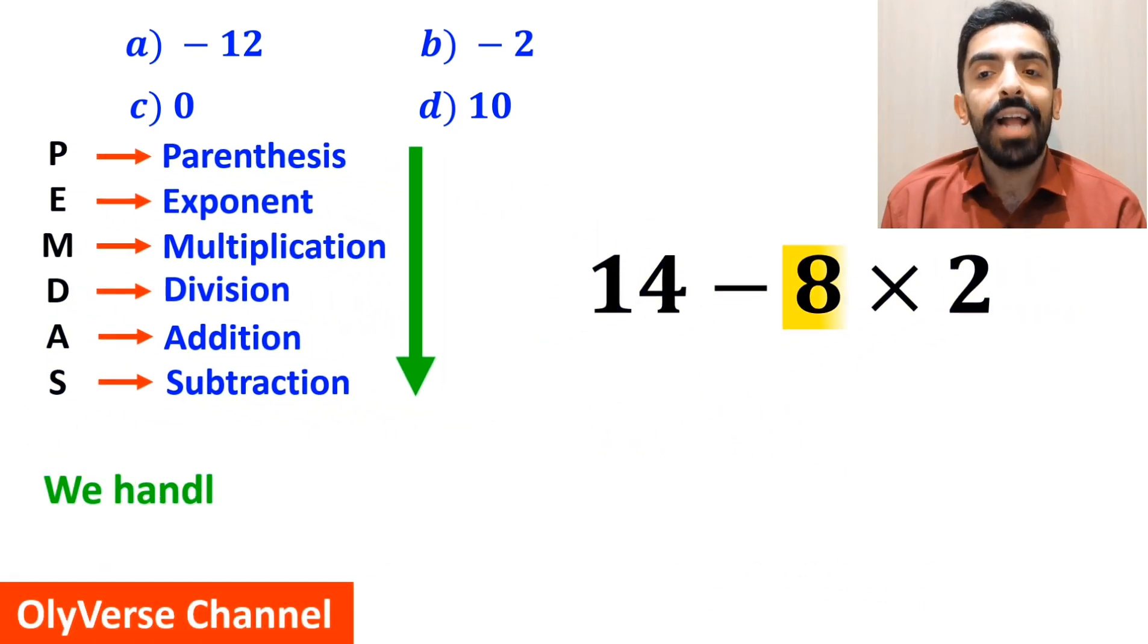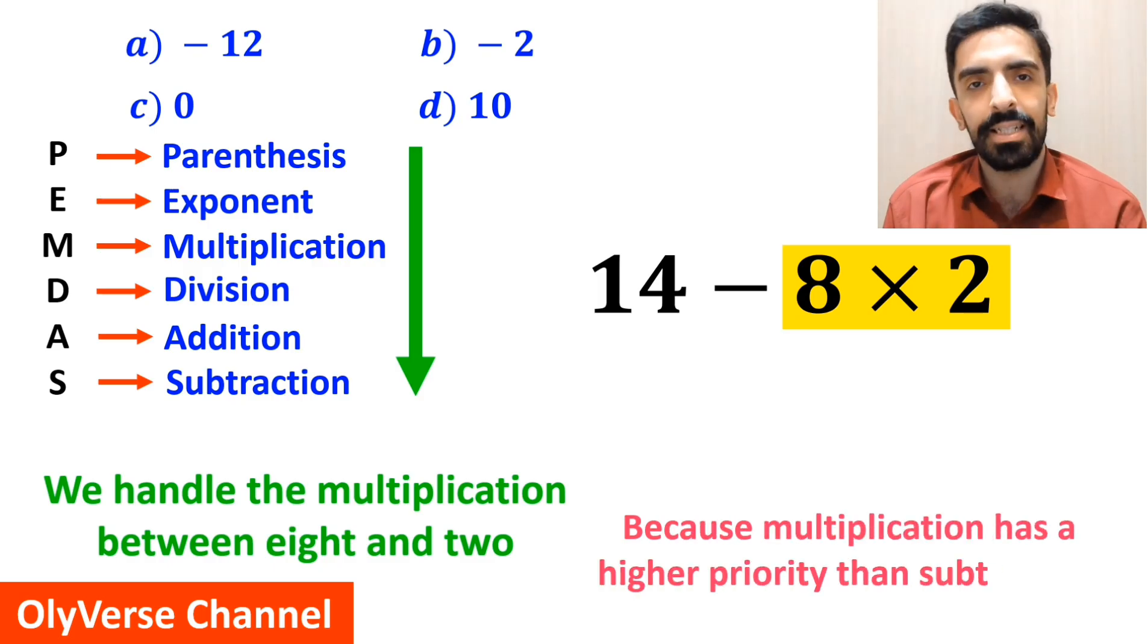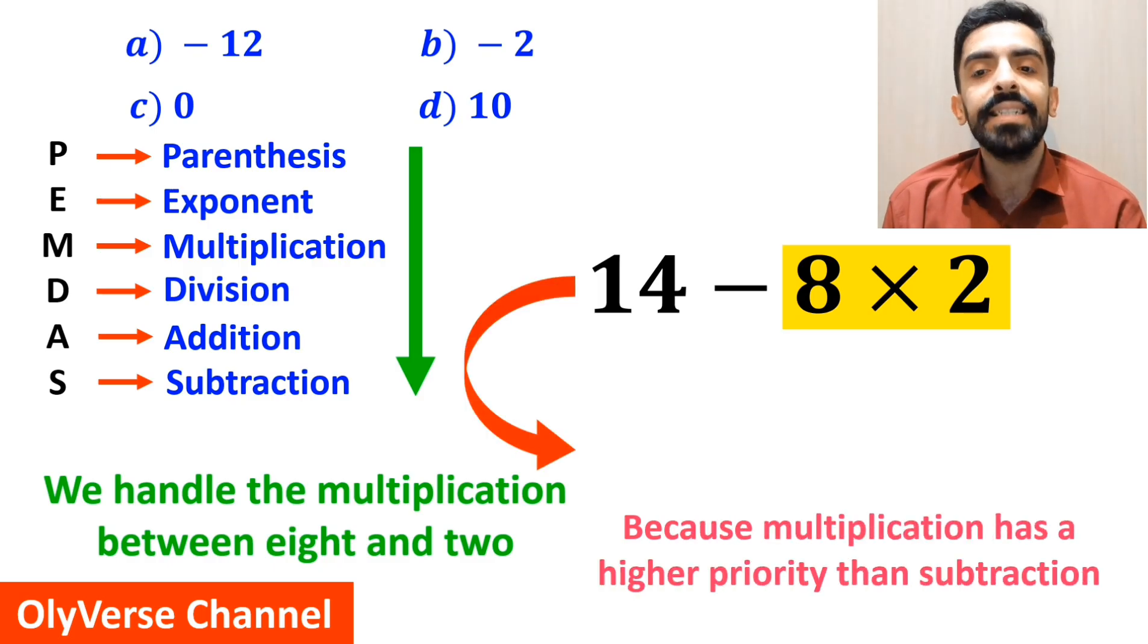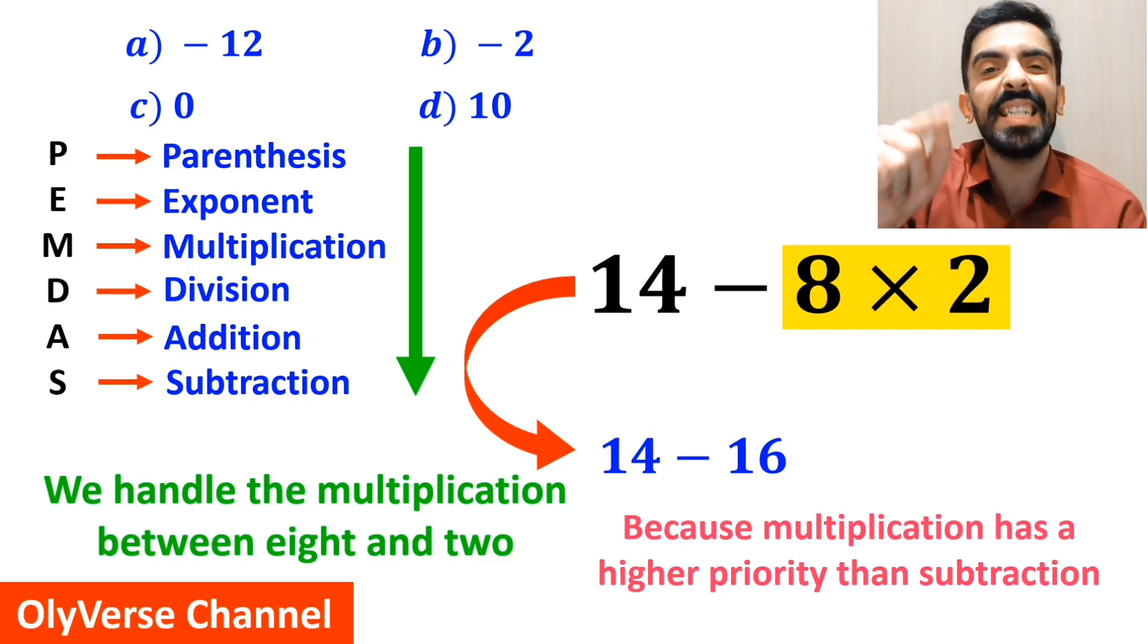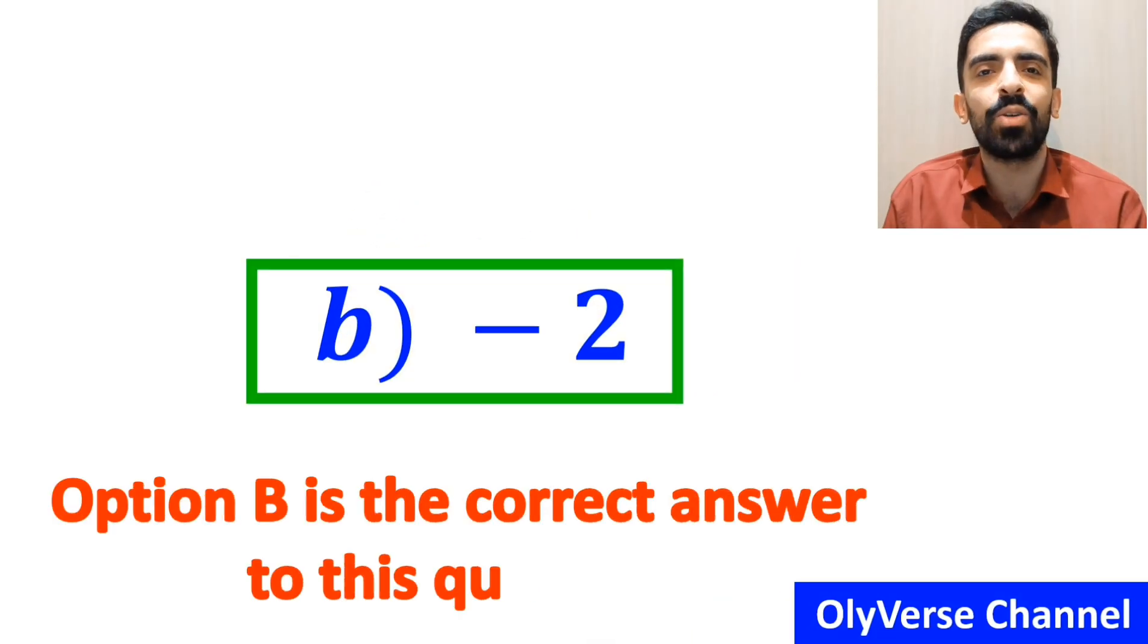In the final step, we handle the multiplication between 8 and 2, because multiplication has a higher priority than subtraction. And this expression simplifies to 14 minus 16, which ultimately gives us the answer negative 2. That's correct. Option B is the correct answer to this question.